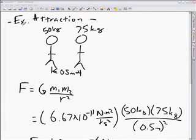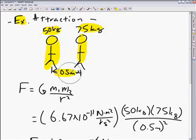Okay, let's do a simple example here using Newton's universal law of gravitation. So we have two people, one 50 kilograms, one 75 kilograms, and they're standing about a half a meter apart.